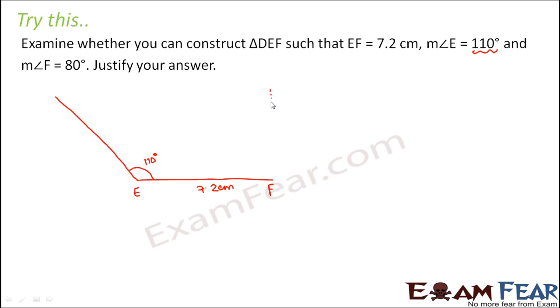Now 90 degrees means perpendicular, right? 90 degrees on point F would have been something like this. So 80 degrees would be slightly less than 90 degrees. Maybe somewhat like this. So this angle is 80 degrees. This is again an approximate thing.